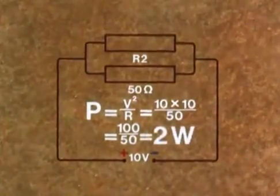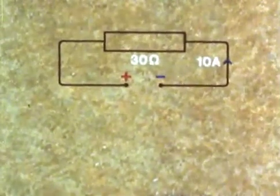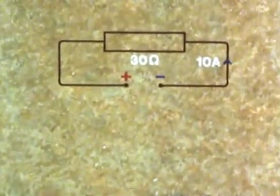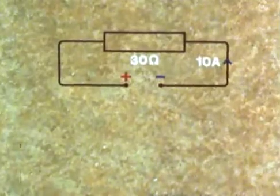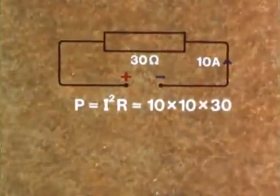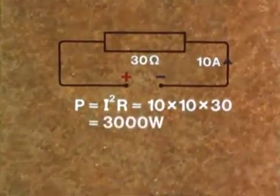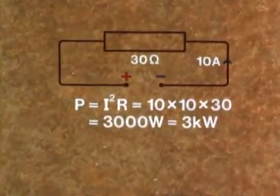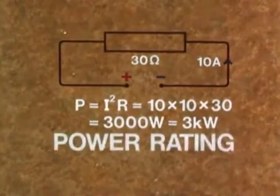And finally, consider a circuit with a resistor of 30 ohms, a heater say, and a current of 10 amps. What is the power taken by the heater? Well, P equals I squared R, so P equals 100 times 30, which equals 3000 watts, 3 kilowatts. And this is called the power rating of the heater.